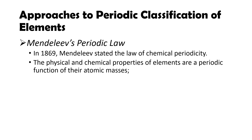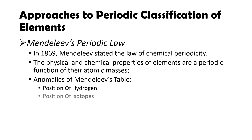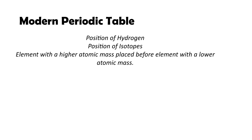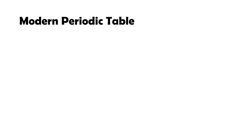Mendeleev's periodic table had some anomalies: the position of hydrogen, position of isotopes, position of noble gases, and the cause of periodicity. The position of hydrogen was not justified, and the discovery of isotopes revealed another limitation. Although Mendeleev arranged elements in increasing order of atomic masses, there were instances where he placed an element with a slightly higher atomic mass before one with a slightly lower atomic mass. These limitations forced scientists to conclude that atomic mass could not be the basis for classification.